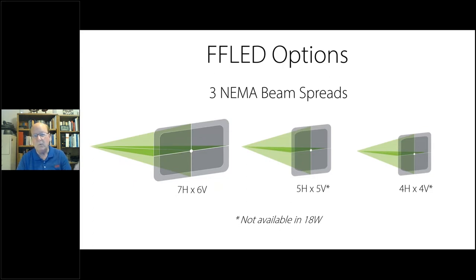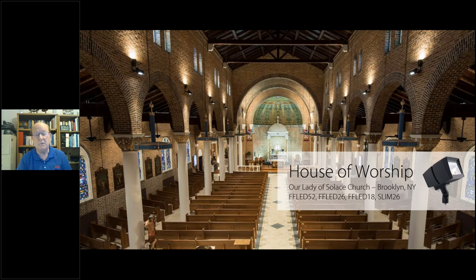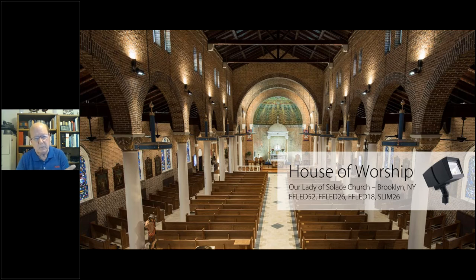The FF LED comes in three beam spreads: seven by six, the standard; five by five, an intermediate between spot and flood; and four by four, the upper end of spotlight range. Think of floodlights typically outdoors, but look at this picture — FF LED 52, 26, and 18s strategically placed create a wonderful interior church environment. You don't usually think of floodlights looking this good, but the rich finish really pops.